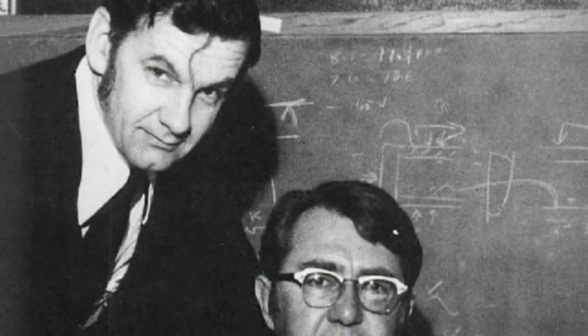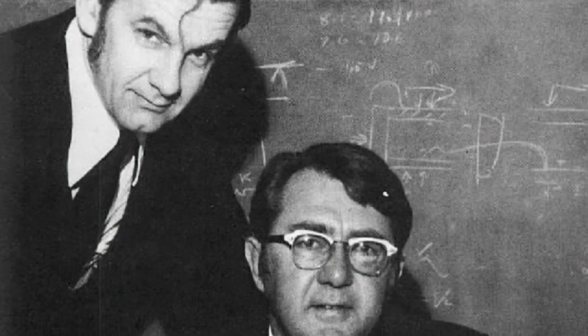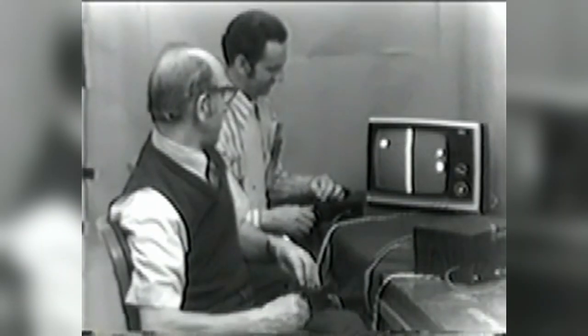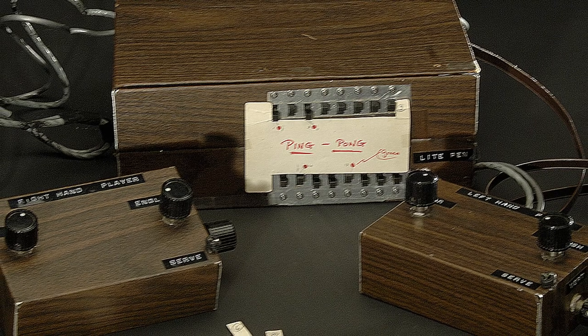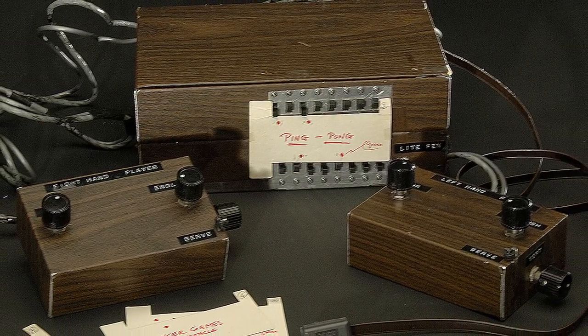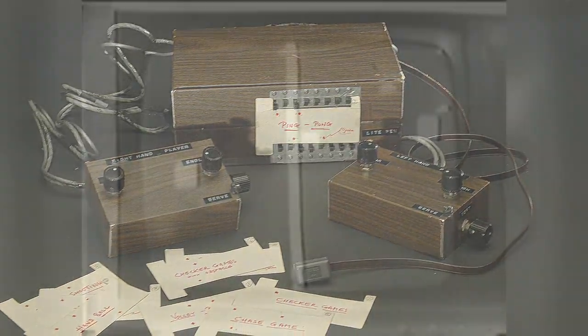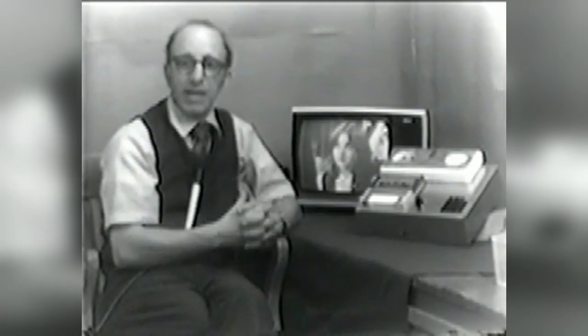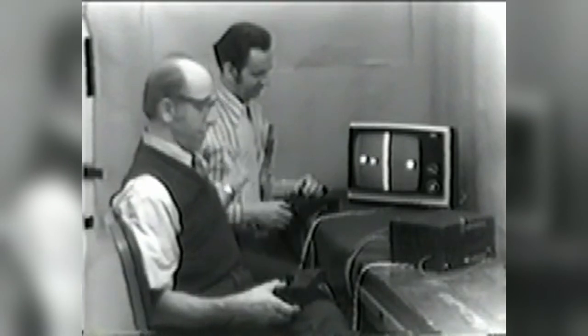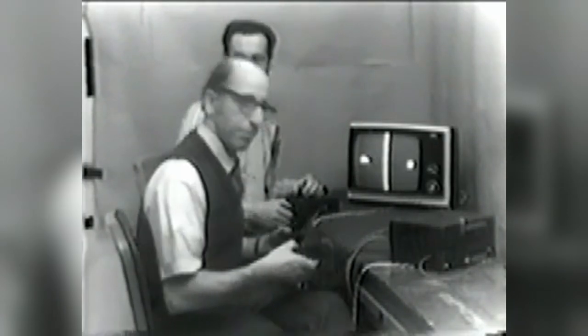Last we left Bill Harrison, Ralph Baer, and the now absent Bill Rush at the end of 1968, they had finalized TV game number seven — The Brown Box — a prototype game machine which could hook into a standard CRT television with several games on board. It was all just blocks of light, but those blocks of light could move more freely and smoothly than any computerized counterpart. Having failed to sell the machine to cable companies, it was time to gauge the interest of television manufacturers.